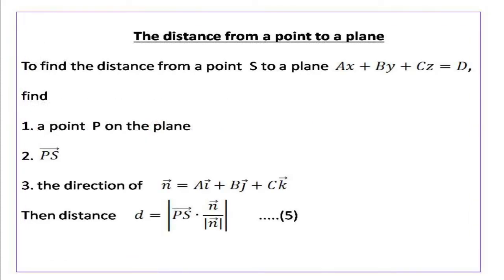Next, we are going to find the distance from a point to a plane. To find the distance from a point S to a plane ax + by + cz = d, we need three things: first, a point P on the plane; second, vector PS; third, the direction of vector n = ai + bj + ck. From the equation of the plane it is clear that vector n is normal to the plane.